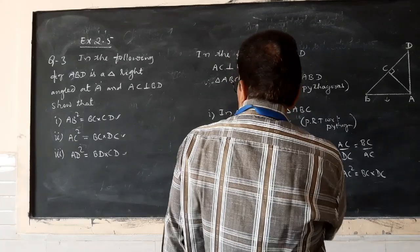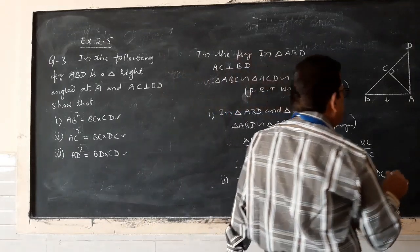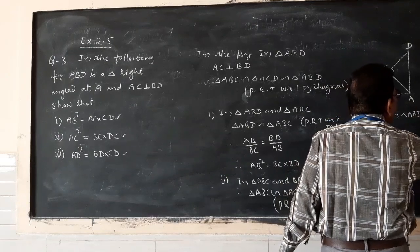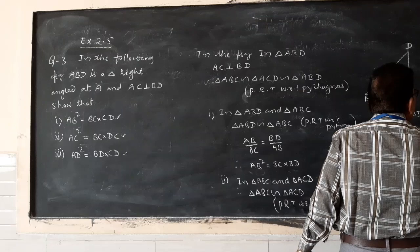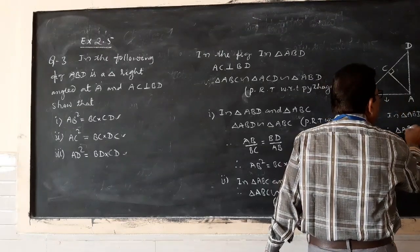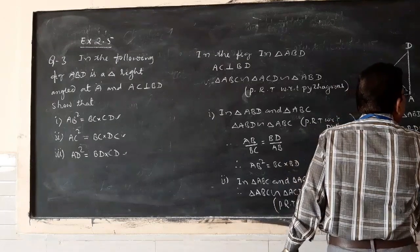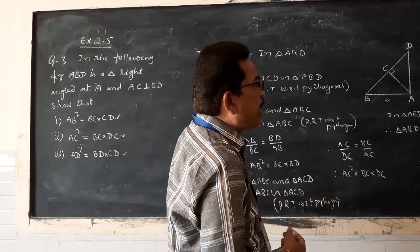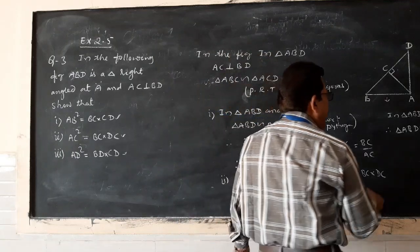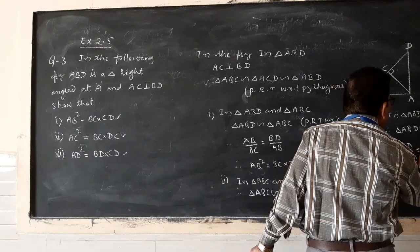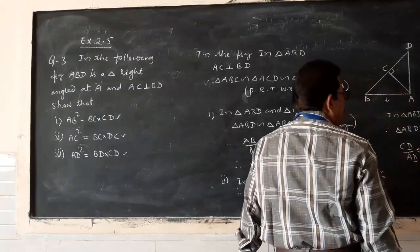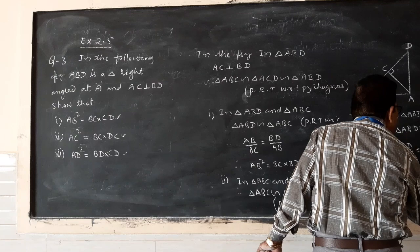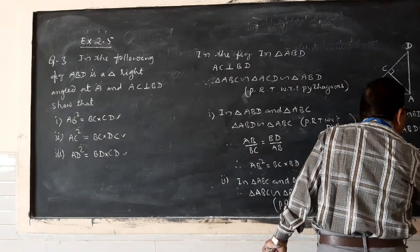Now let us move to the third one: AD² = BC·CD. Let us consider triangle ABD and triangle ACD. Triangle ABD is similar to triangle ACD. Writing the corresponding sides of the similar triangles: CD by AD equals AD by BD. Therefore, AD² = CD·BD. This proves the third result.